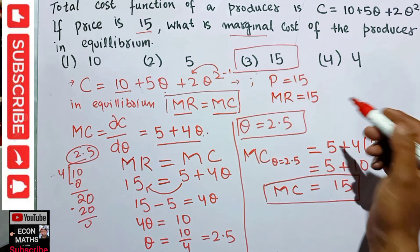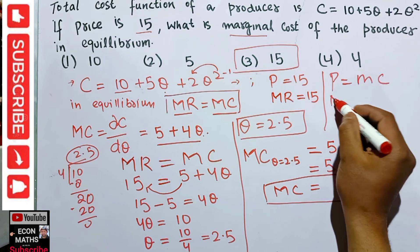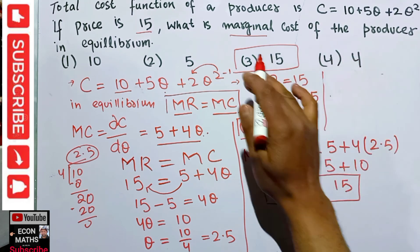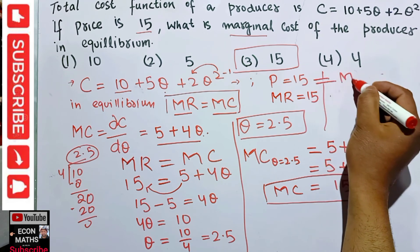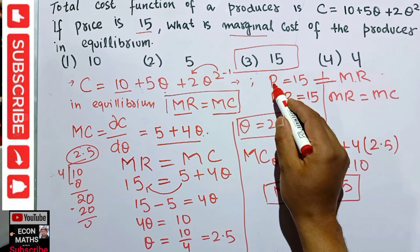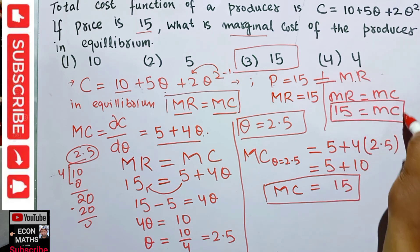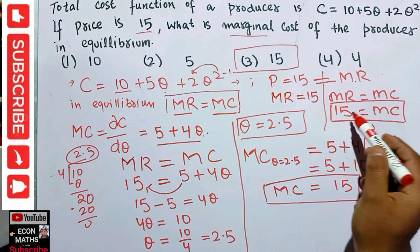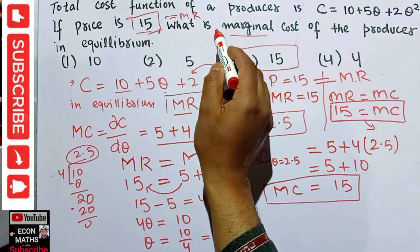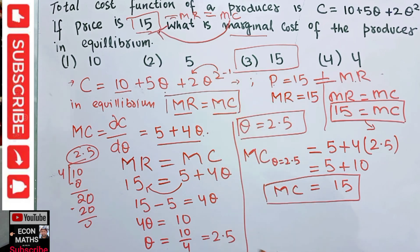There is also a shortcut: since price = 15, and price equals marginal revenue, and the equilibrium condition is that marginal revenue should equal marginal cost, we can directly conclude that marginal cost is also equal to 15. So the answer is 15.